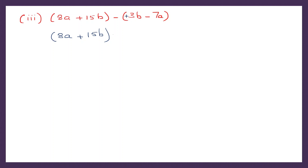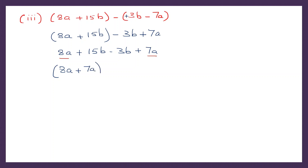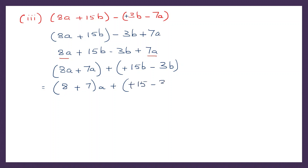Question 3. When we open the bracket it becomes minus 3b plus 7a, so minus becomes plus. Let's open all brackets: 8a plus 15b minus 3b plus 7a. Now let's take the like terms: 8a and 7a together, plus 15b minus 3b. So 8 plus 7a plus 15 minus 3b. 8 plus 7 is 15a; plus 15 minus 3 is 12b. So our final answer is 15a plus 12b.